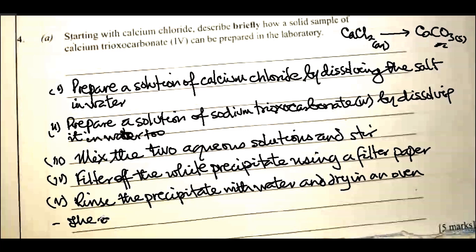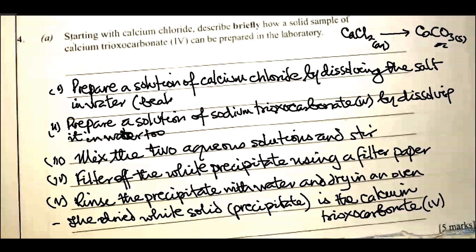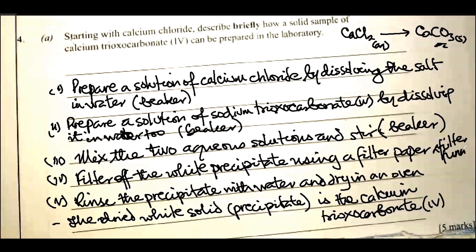The dried white solid, which is the precipitate, is the calcium trioxocarbonate(IV). To get your full marks, you must add the apparatus used in each step — mixing takes place in a beaker, and you use filter paper and a funnel for filtration. That's how to prepare insoluble calcium trioxocarbonate(IV) in the lab starting from calcium chloride.